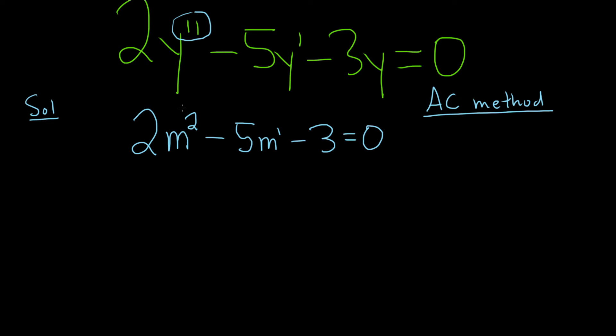So the AC method says that you take these two numbers and you multiply them. 2 times negative 3 is negative 6. And then if the AC method is going to work, we need to find two numbers such that they multiply to negative 6.